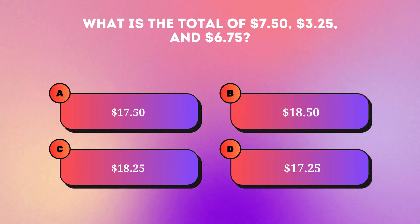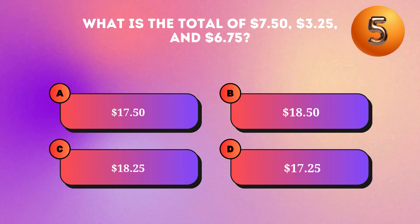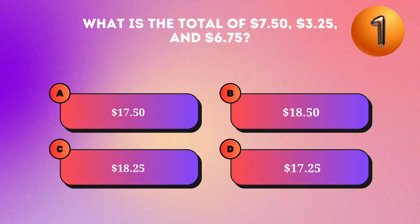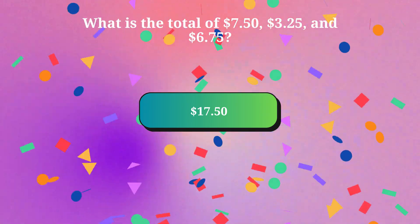What is the total of seven dollars fifty cents, three dollars twenty-five cents, and six dollars seventy-five cents? Seventeen dollars fifty cents.